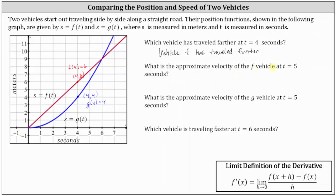Next, what is the approximate velocity of the f vehicle at t equals five seconds? The velocity is equal to the slope of the tangent line to the position function. Because we're focusing on vehicle f, we're focusing on the red line. If we locate the point where t equals five and sketch a tangent line at this point, notice how the tangent line is the same as the function f of t. To find the velocity, we need the slope of this red line. Going up approximately 1.5 units and right one unit, the slope is 1.5 divided by one, or 1.5, which indicates the velocity is approximately 1.5 meters per second at t equals five seconds.